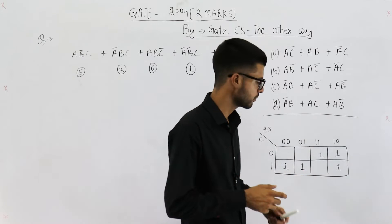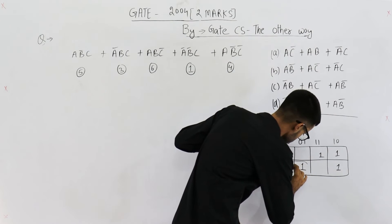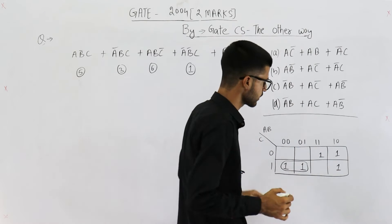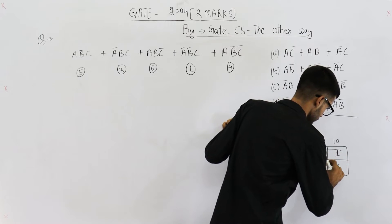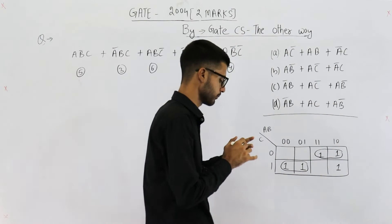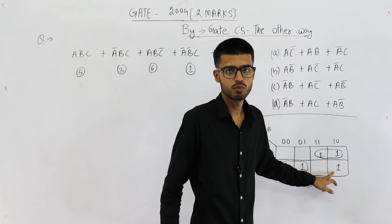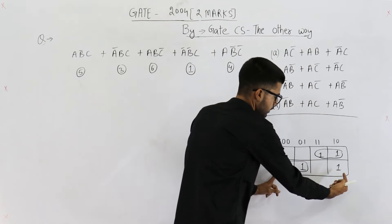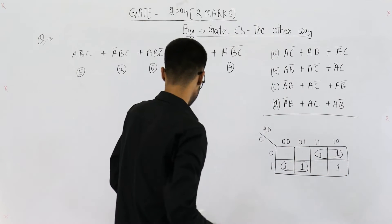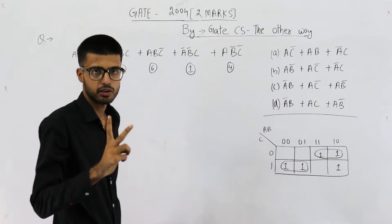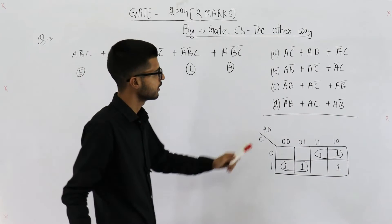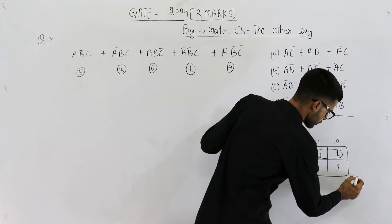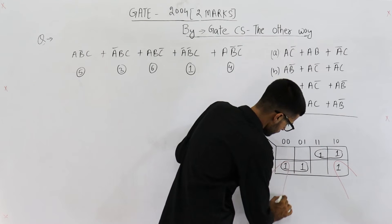Now let's group these. To group this one there is only one method. Similarly, to group this one, there is again only one method — a group of two is formed. But to group this one you have two ways: first, a group of two like this, and second, a group of two using the corner cells. That means you will have two minimal expressions, and both are correct.